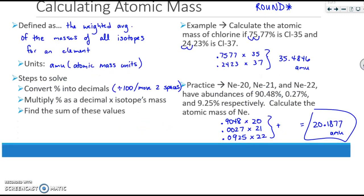You can see the work for this practice problem. I moved my decimal over two spaces for all of them, multiplied them by their given mass, and then I added the three values together to get 20.1877. This concludes our study of atomic structure.